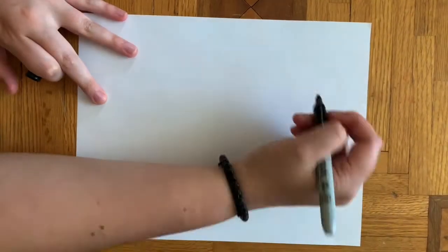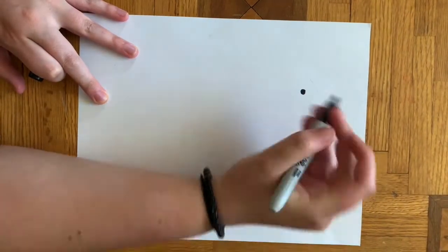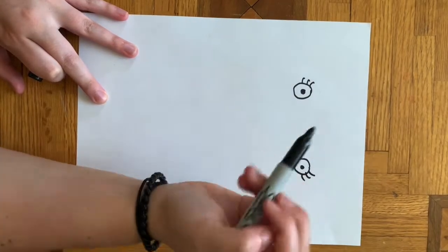To start, you'll need a paper and a utensil. Start with making the eyes with two dots and lines.